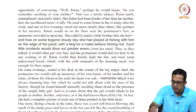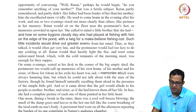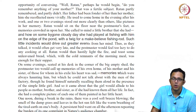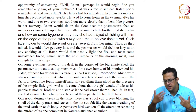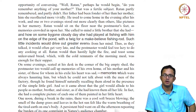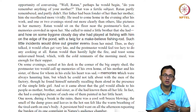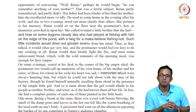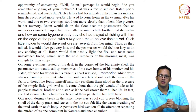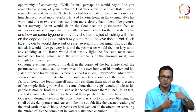It came about that the girl would allude to his people — mother, brother, and sister — as if she had known them all her life. In fact she had a complete picture of each one of them painted in her little heart. This is a very good example of what we call world-making through stories. The little girl Ratan, consuming the stories told by the postmaster about his family, manages to make a world around them in a way that she plans to exist in that world.